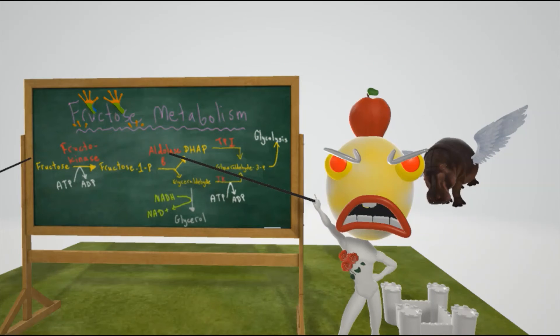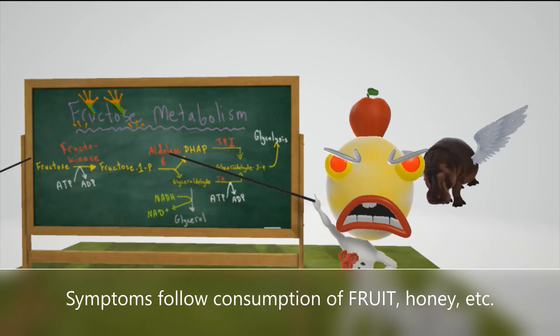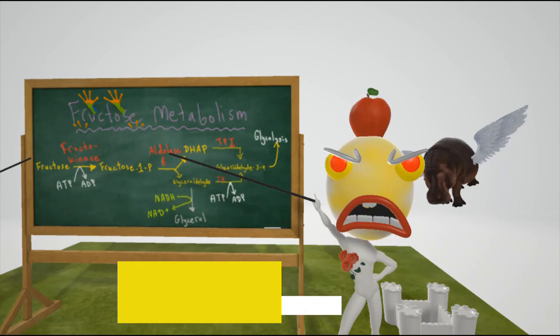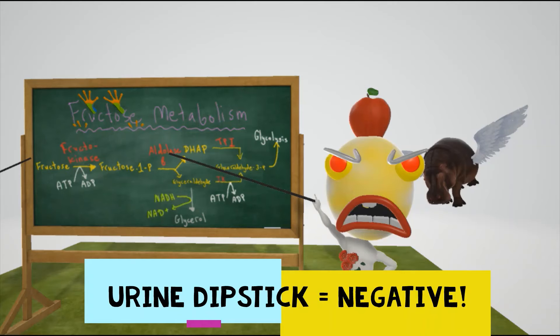Why does the teacher have an apple on his head? Maybe because he was about to eat it? This does help us remember that symptoms in hereditary fructose intolerance follow consumption of fruit, juice, honey, and things like that. Just to mention, the urine dipstick will be negative because this only tests for glucose.